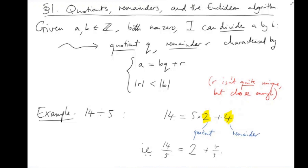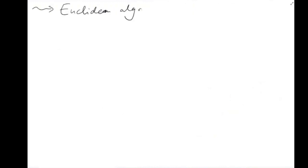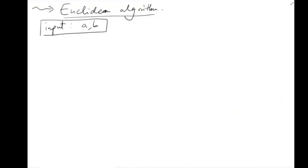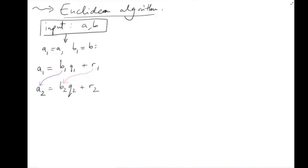This leads to the Euclidean algorithm. Let A1 equal A, let B1 equal B, and let's calculate their quotient and remainder Q1 and R1. Then we let A2 be B1, B2 be R1, and we repeat, and we keep repeating.